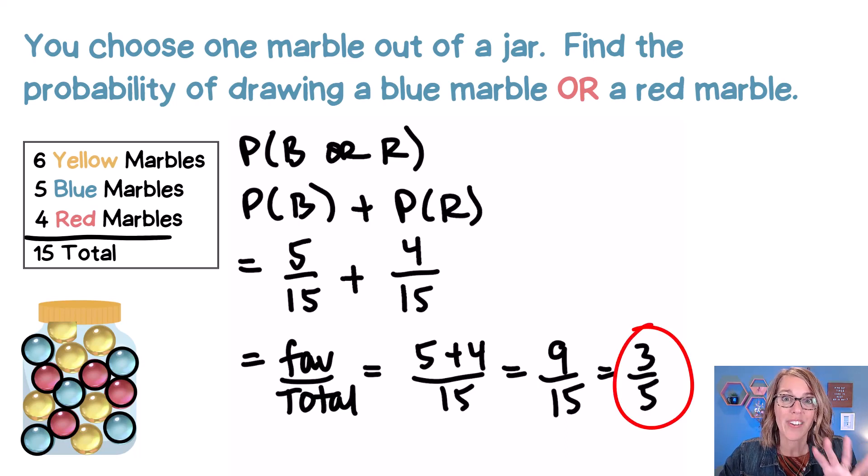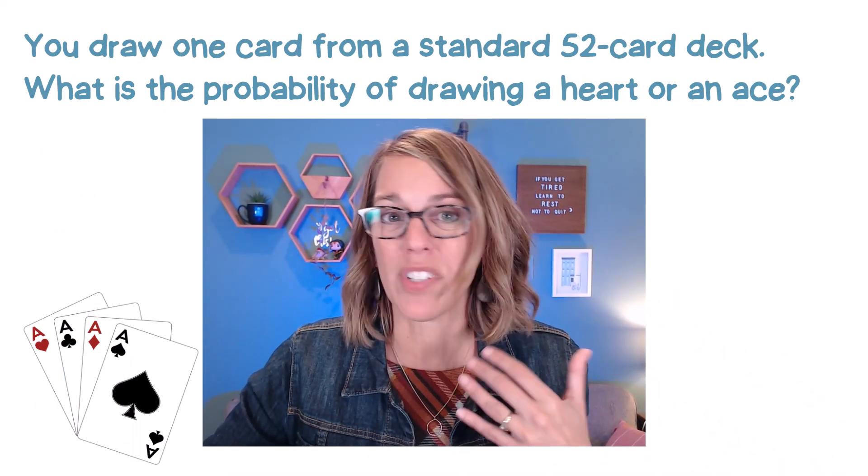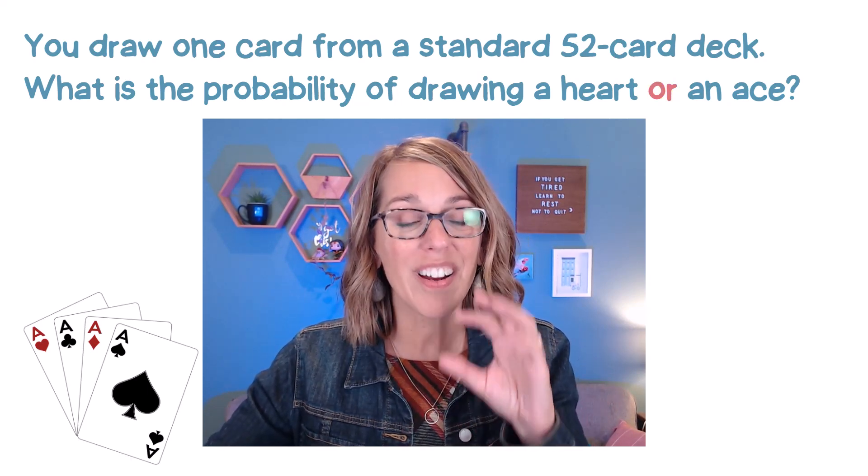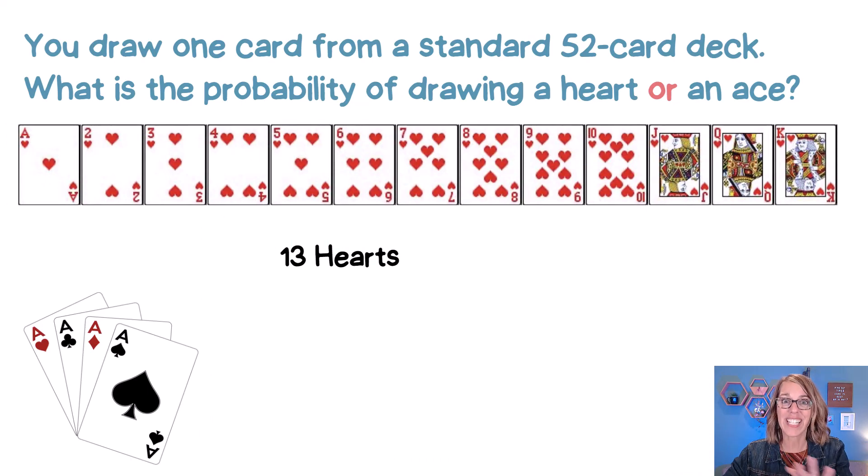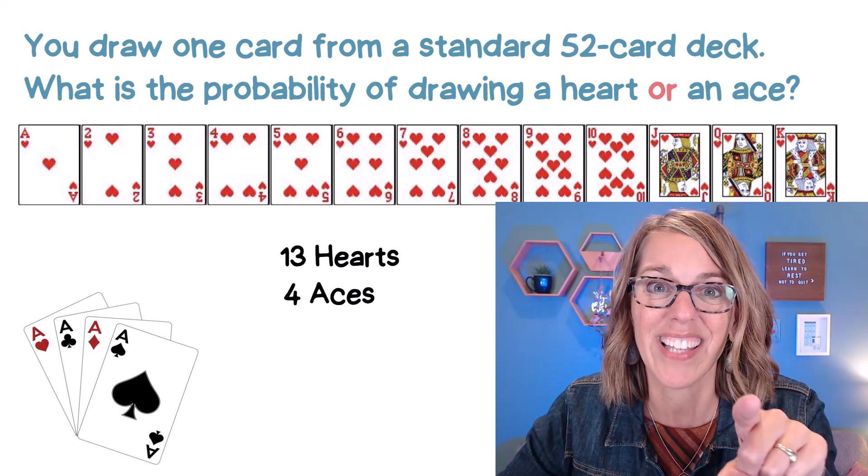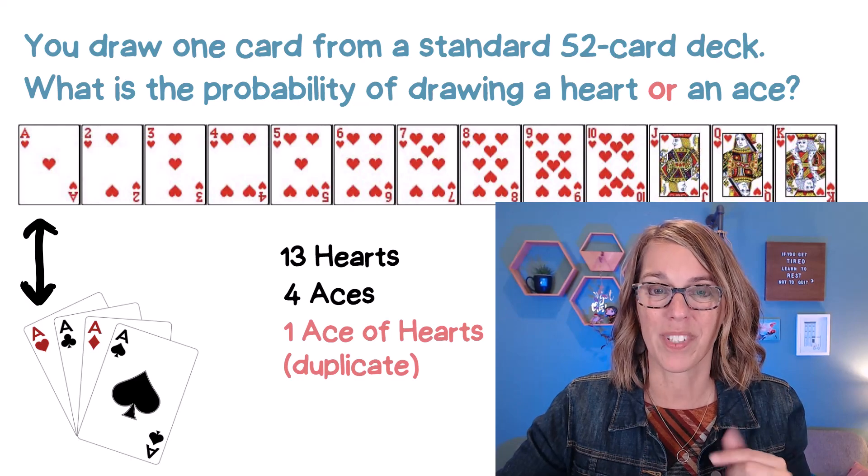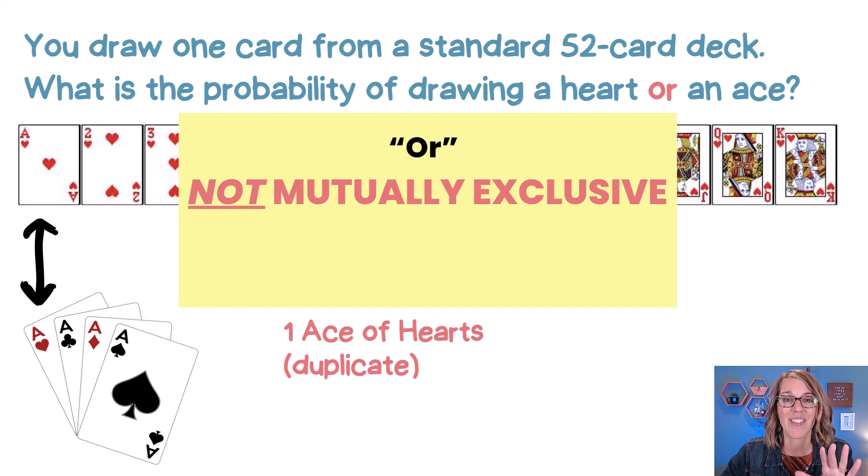Let's take a look at an example where they're not mutually exclusive. So now we're going to draw a card from just a regular old deck of cards and I want to know what the probability is of getting either a heart or an ace. I've got my four aces down there, but in a standard deck of cards there are 13 hearts along with those four aces, but take a look. Do you see that duplicate? There is an ace of hearts that's actually counted in both groups. This is our duplicate, which means that these two events are not mutually exclusive. I can draw a card that's both a heart and an ace.